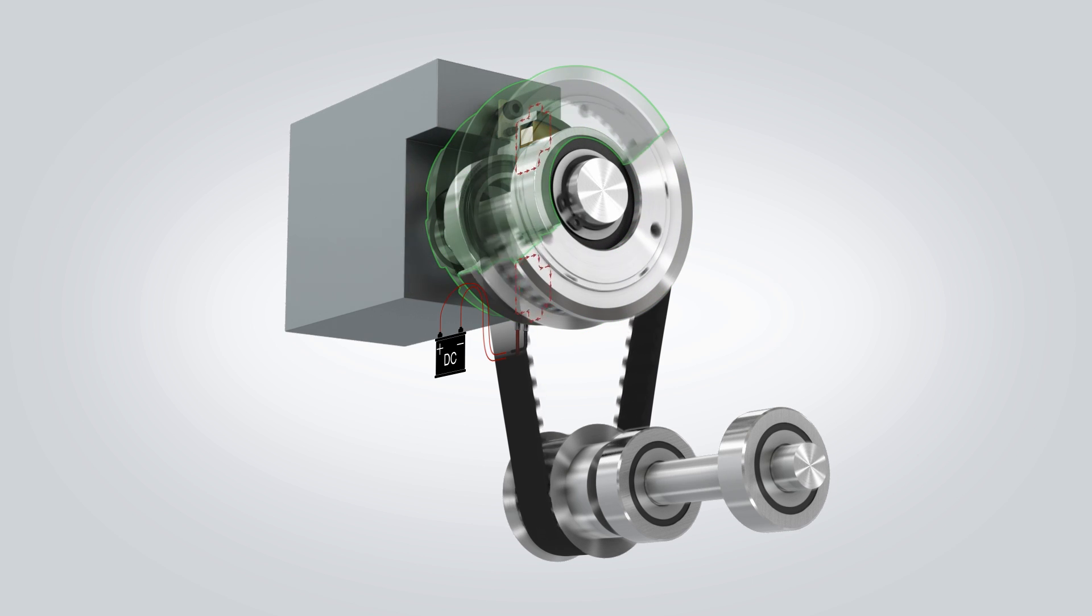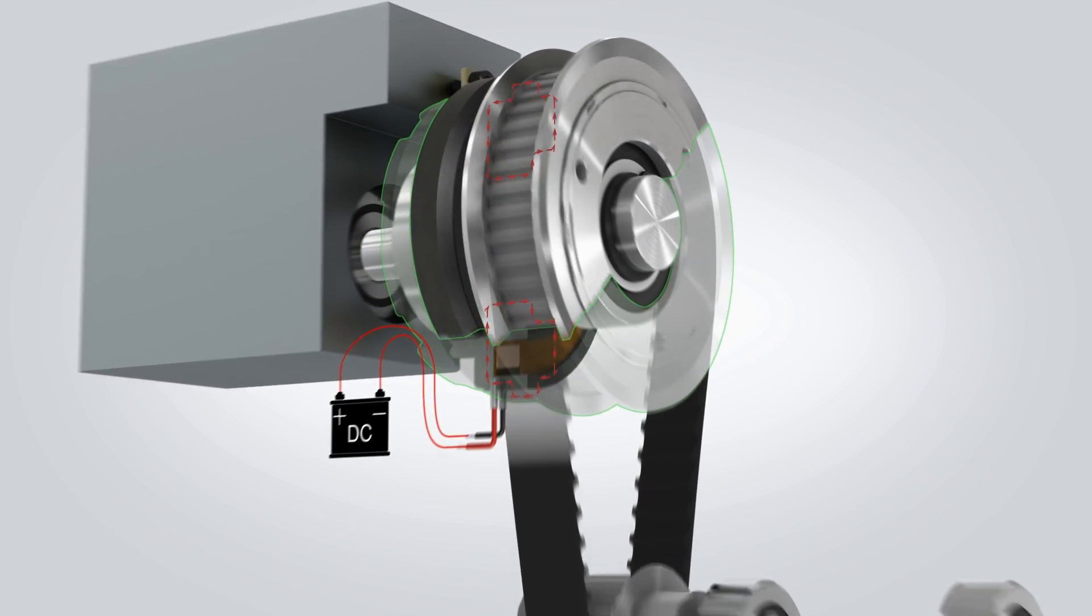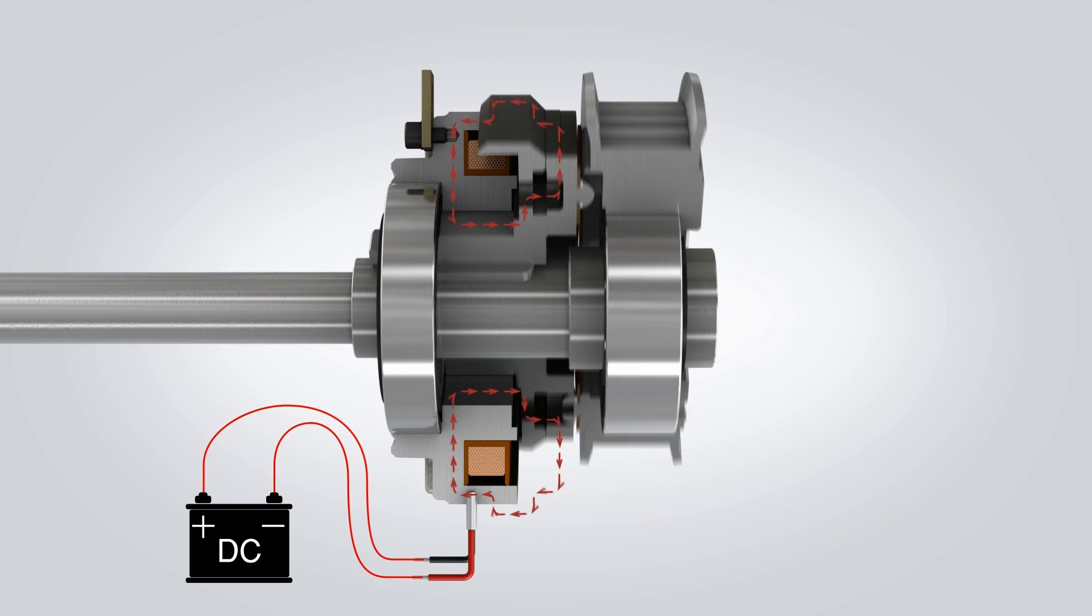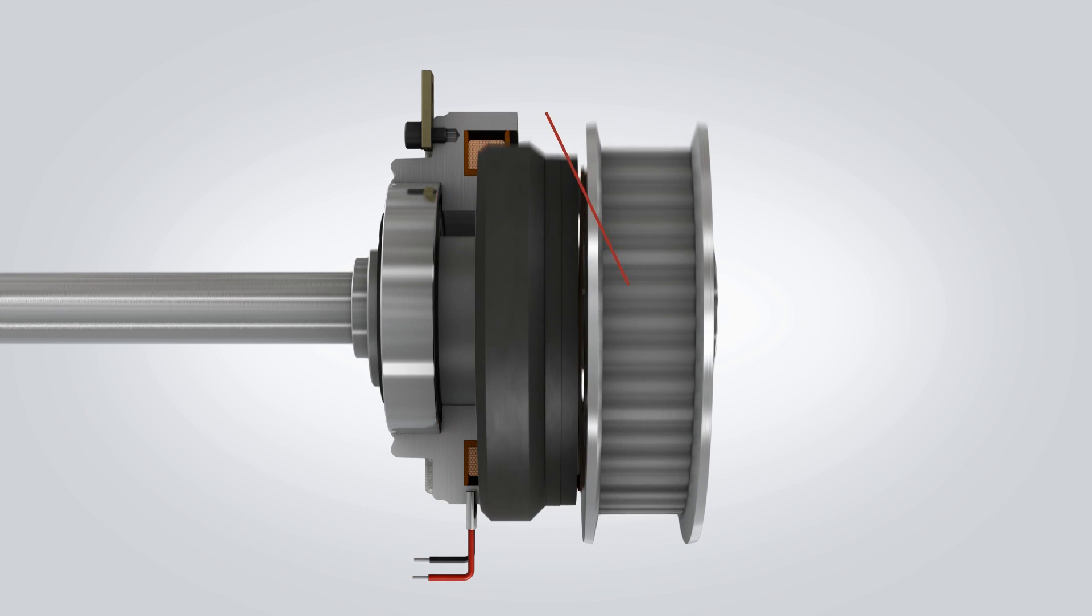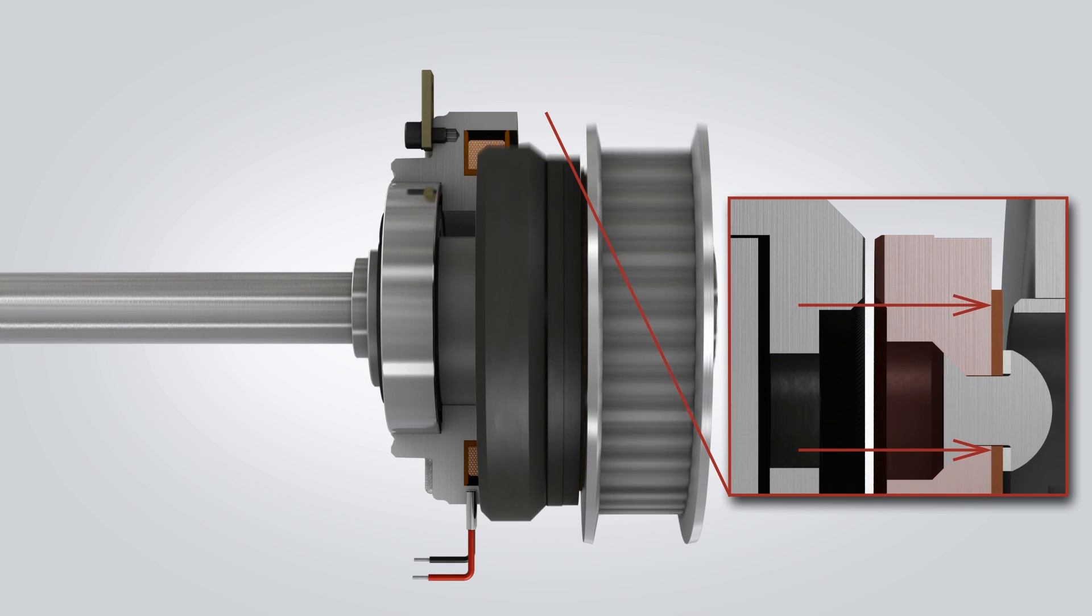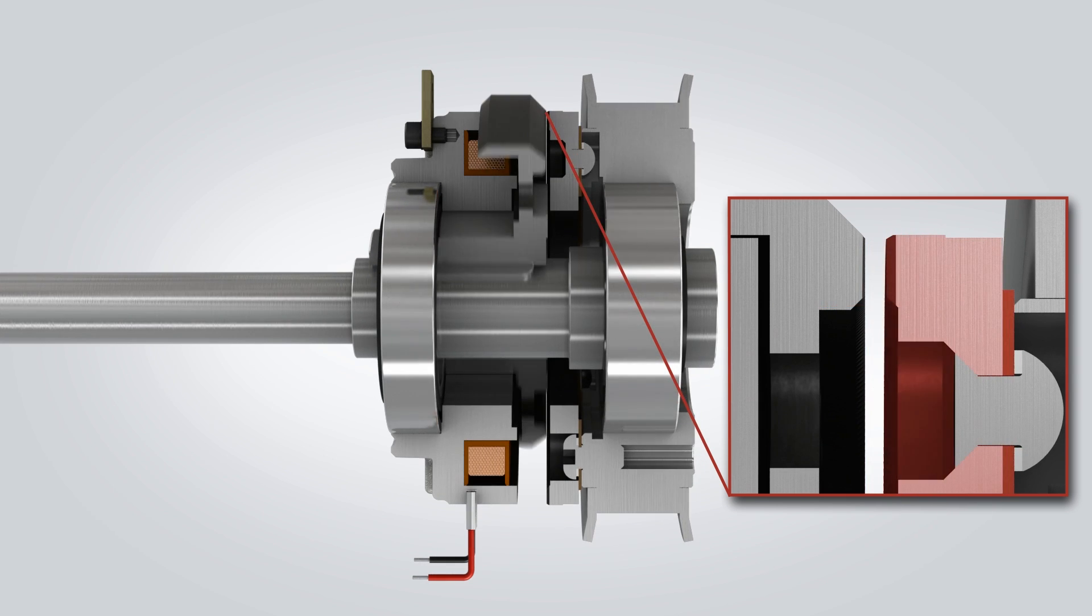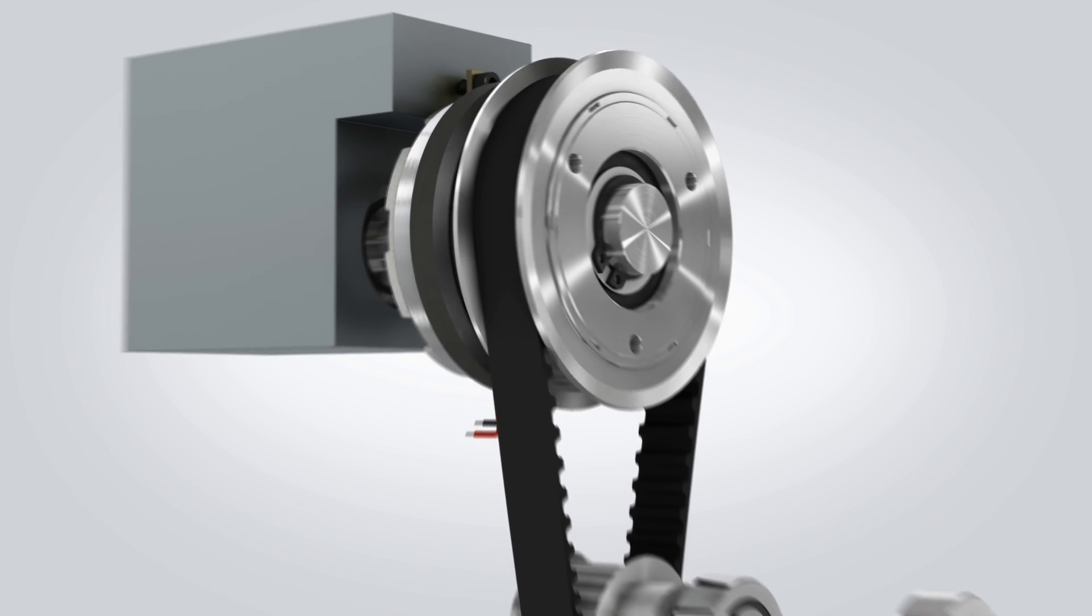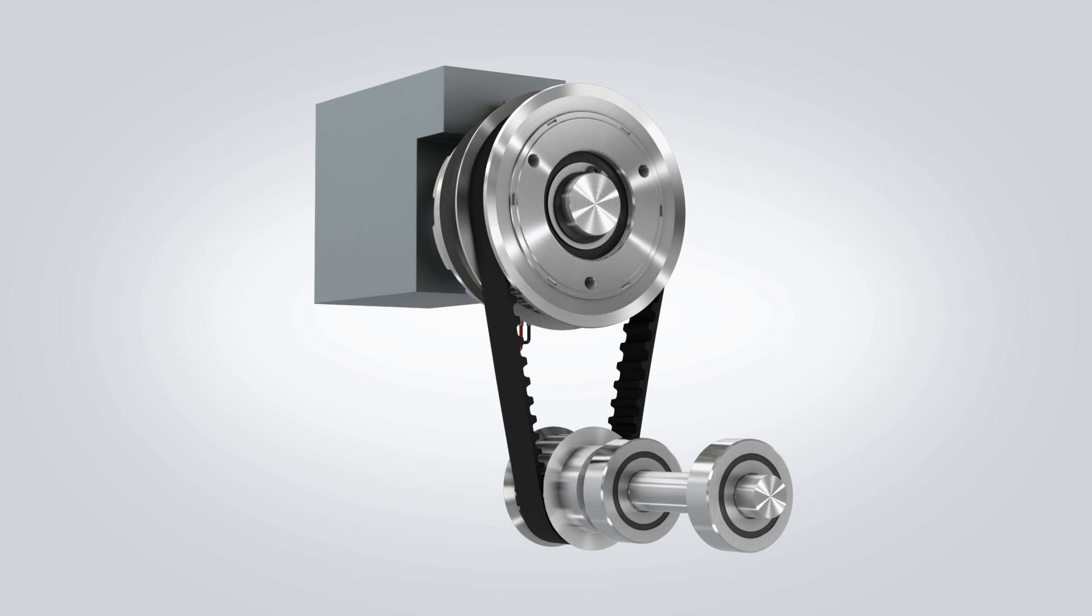The tooth clutch should be engaged when the shafts are stationary or the tooth profiles could be damaged. When electrical power is removed from the coil, the flat spring returns and pulls back the armature. Without the toothed connection, the two shafts rotate independently.